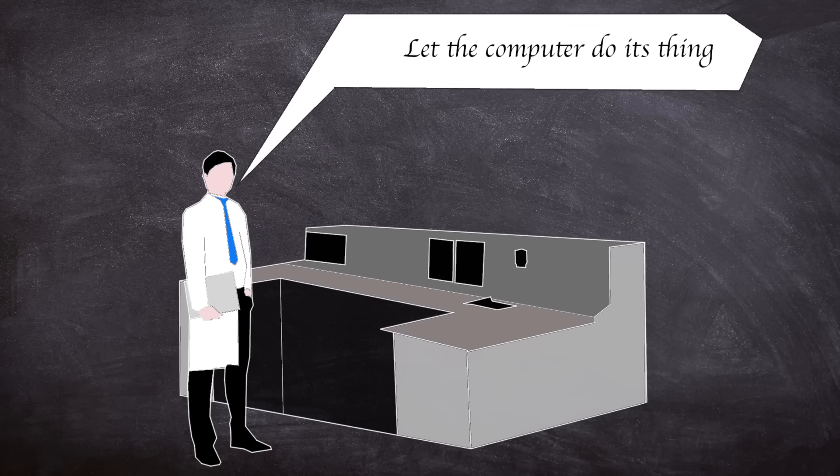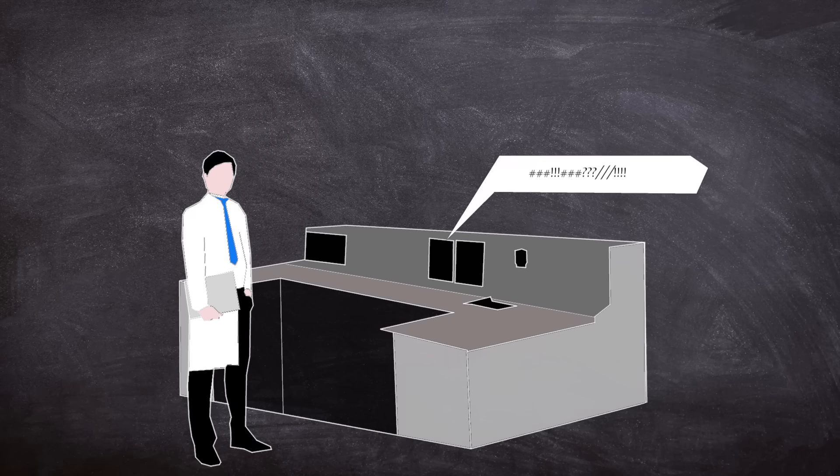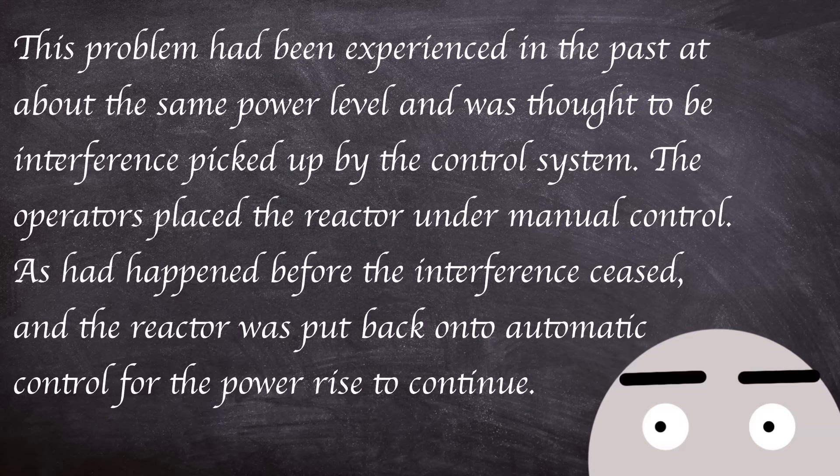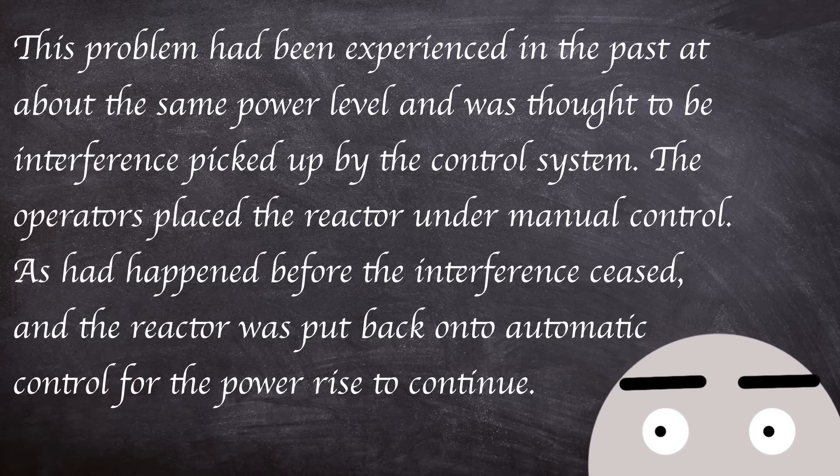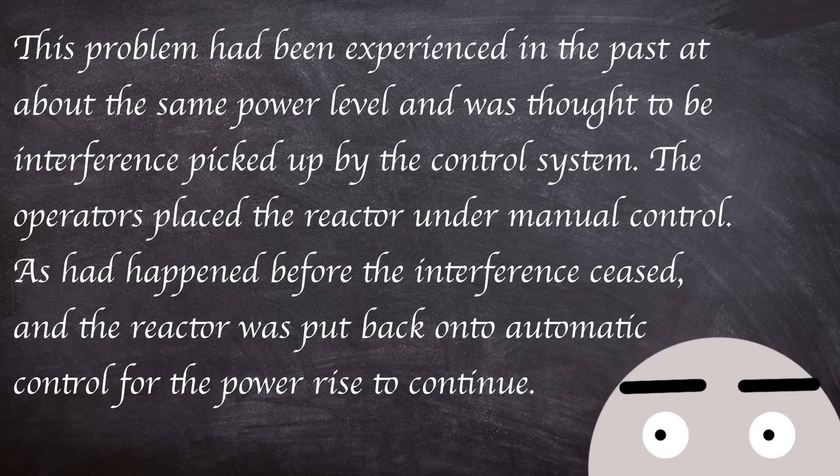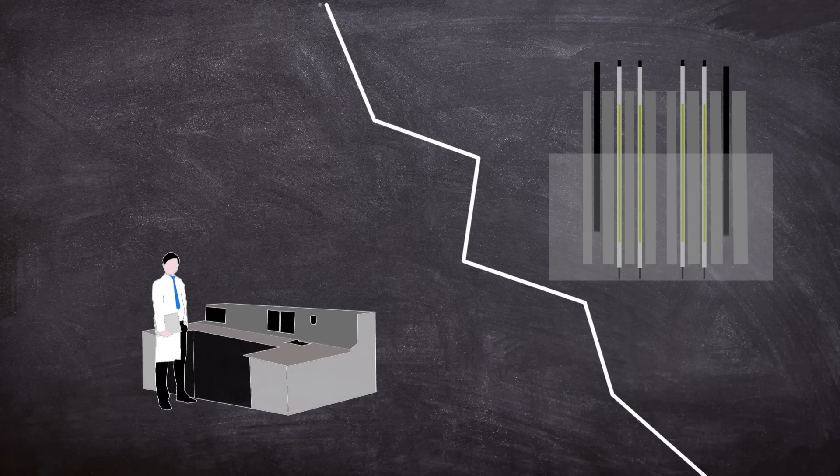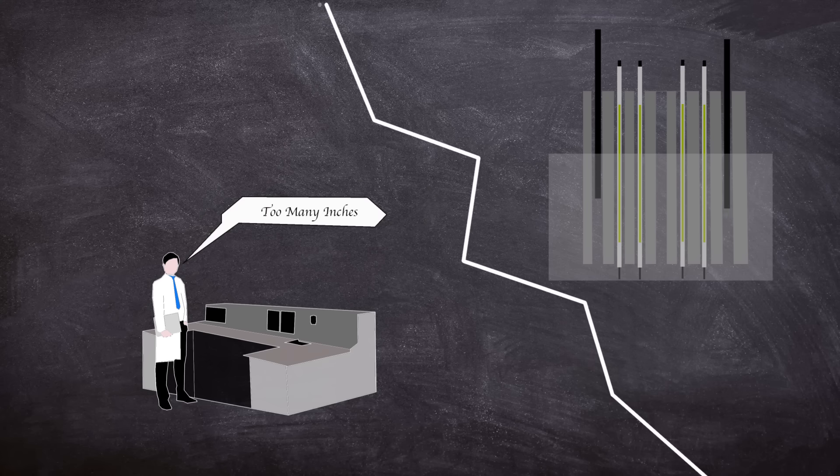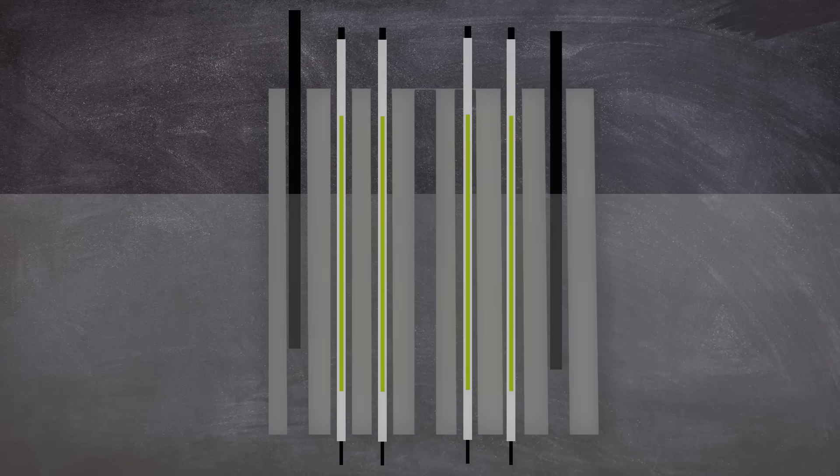The reactor was then put on automatic control until about 3 PM, reaching a power of 20 megawatts. The reactor operators observed variations in the automatic control system. This problem had been experienced in the past at about the same power level and was thought to be interference picked up by the control system. The operators placed the reactor under manual control. As had happened before, the interference ceased and the reactor was put back onto automatic control for the power rise to continue. Just after 3 PM, a staff member in charge of the operation saw that the control rods appeared to be withdrawn further than normal for this power level. Both the shim and regulating rods were approximately 9 inches withdrawn—usually at this time the rods would be at around 6 inches. Abnormally high sodium outlet temperatures were being indicated over two sub-assemblies.